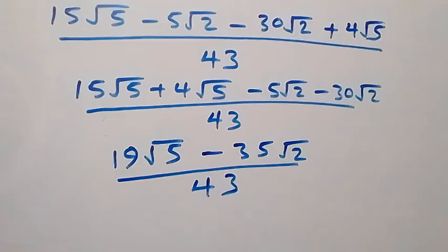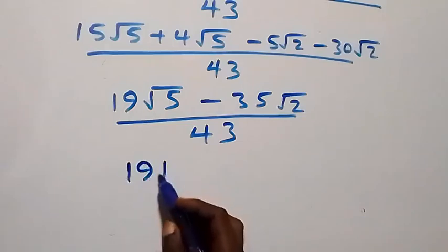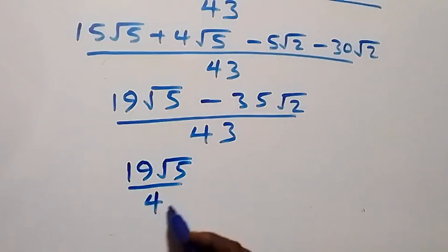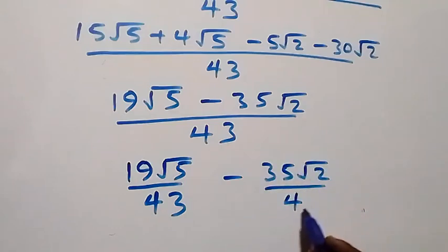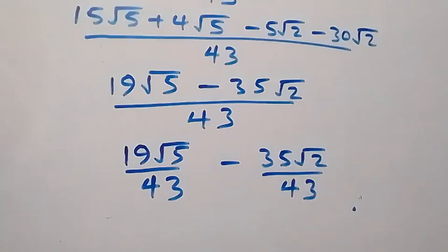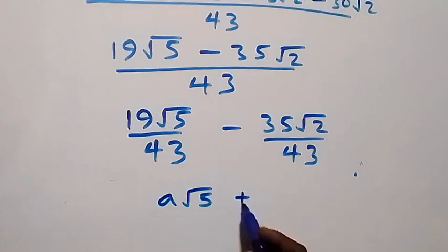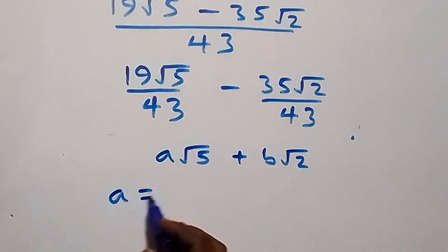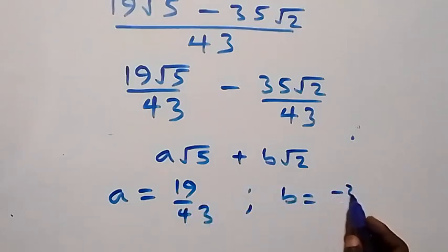From here we can separate this into two fractions: 19 root five over 43, minus 35 root two over 43. Comparing with the form a root five plus b root two, we find a equals 19 over 43 and b equals minus 35 over 43.